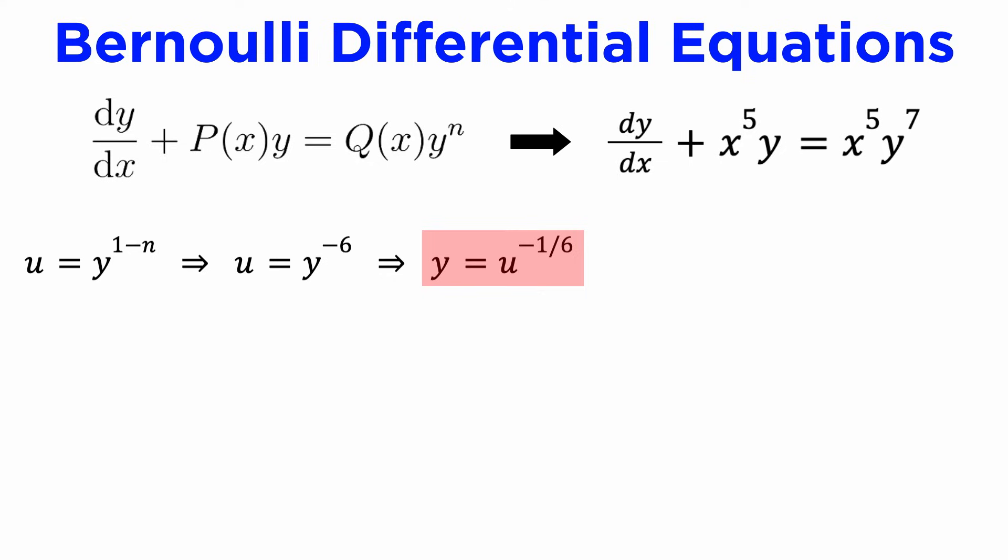Before we can use this substitution in our DE, we need to express dy/dx in terms of u, which we can do by differentiating both sides of this substitution with respect to x. Using the power rule and the chain rule, we will get dy/dx equals negative 1/6 times u to the negative 7/6 times du/dx. Now that we have expressions for both y and dy/dx, we can put them into our DE to eliminate y, and we get this new differential equation here.